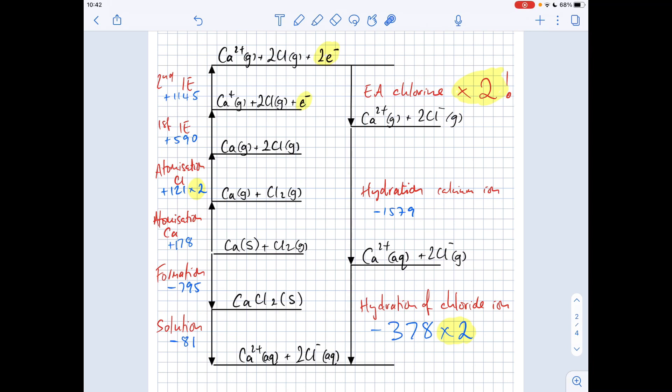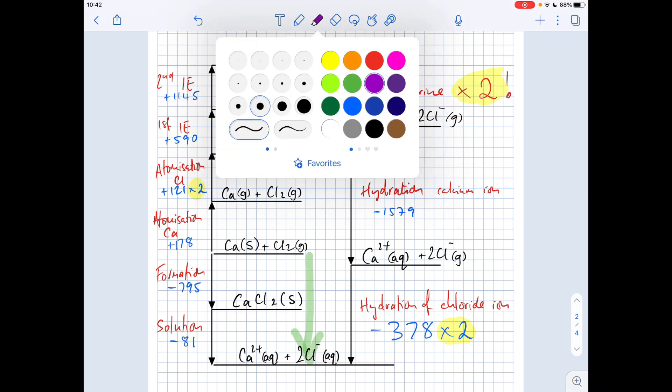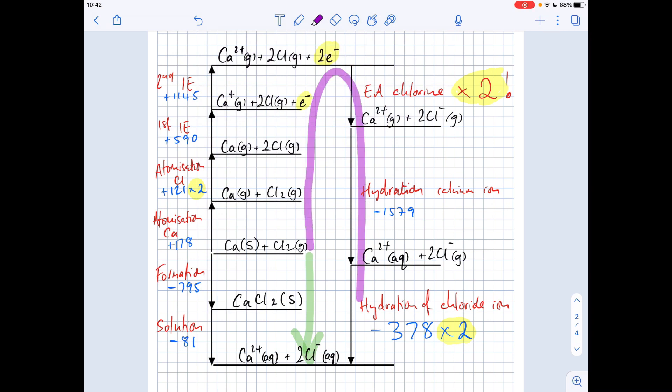So in terms of the calculation, we've got two routes going from elements to aqueous ion. So we can either go straight down or we can go around the long way. Hess's law says that the sum of the enthalpy changes in each route will be the same because they start and finish at the same place. So if I just highlight the two routes in two different colours. So what we're going to do is we're going to add those two together. And then I normally put all the numbered ones in a bracket. And obviously that's going to be outside the bracket because I don't know what that value is. I'll just solve for that. But remember, we're going to halve it at the end.